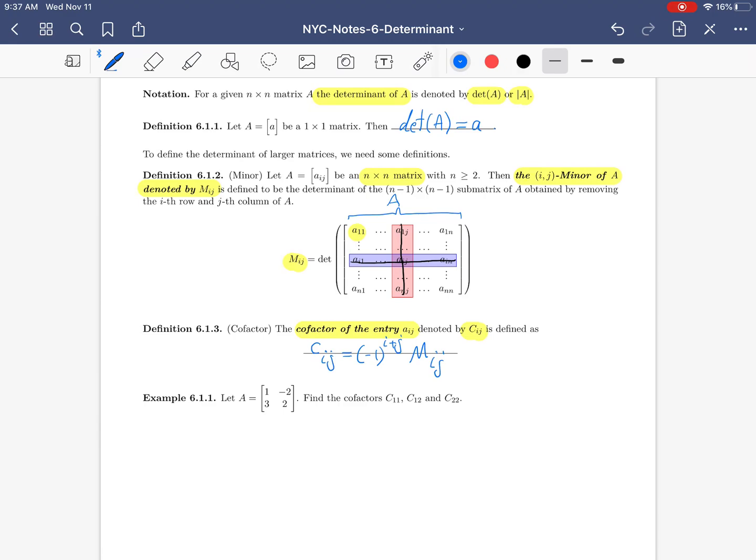To understand, please pay attention carefully to example 6.1.1. Let A be a 2 by 2 matrix with entries 1, minus 2, 3, 2. Find the cofactors C_11, C_12, and C_22. Of course there's one more cofactor, which is C_21, but the question is asking us to compute only three of them. Let's start. Because this is the first example, I'll write all the details.